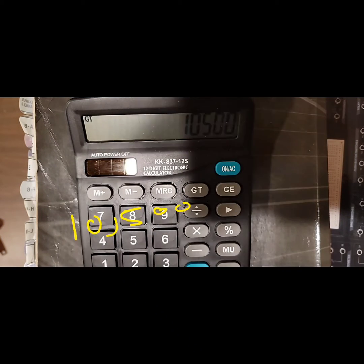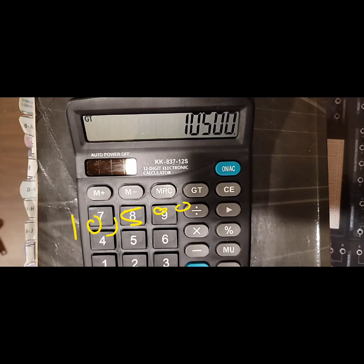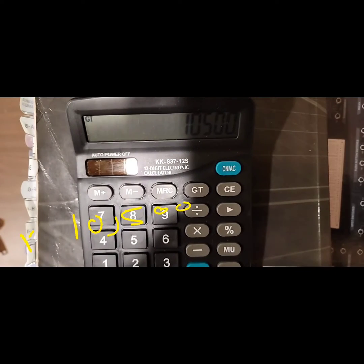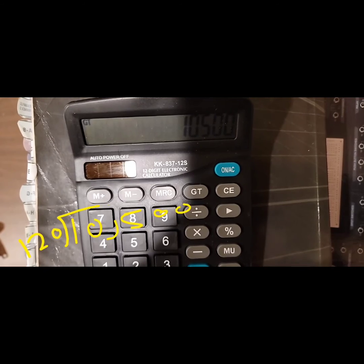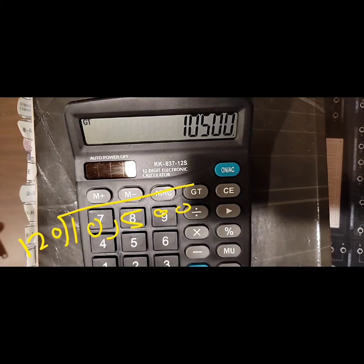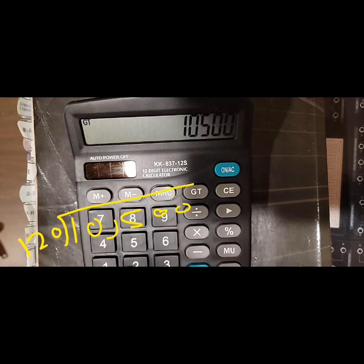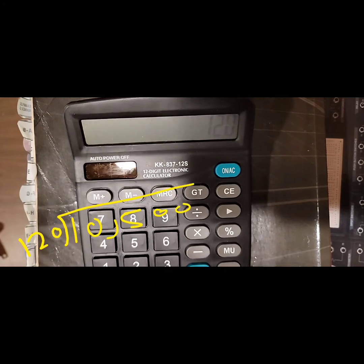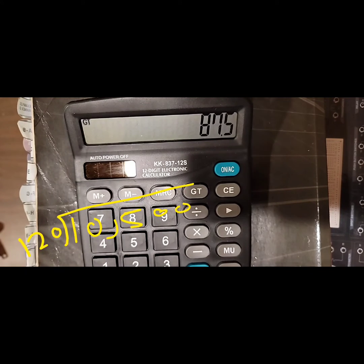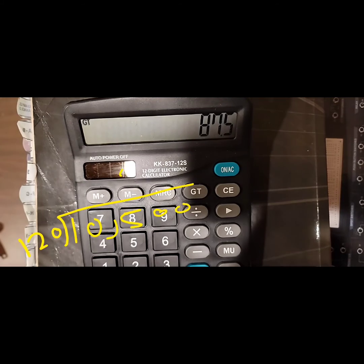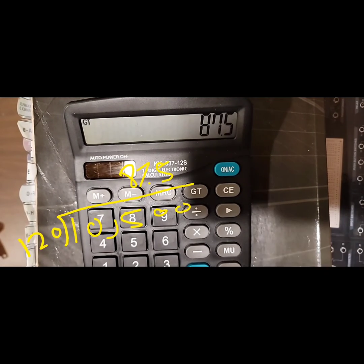Now at this point in a normal load calculation, you'd start applying some demand factors once you've calculated a little bit further. But we're not going to do that in this case. What we're going to do is take that number and divide it by the system voltage. So we're going to take 120. We're going to take this number and divide it by 120. That is going to give us 87.5.